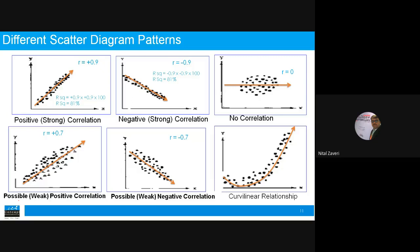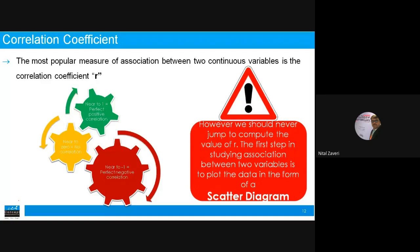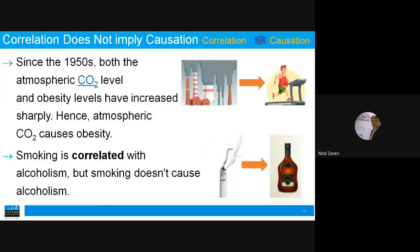Always plot a scatter diagram before starting any investigation — use both graph and computation. The r value ranges from −1 to 0 to +1. We recommend calculating both small r and capital R² in correlation analysis. However, always plot the scatter diagram first before computation.